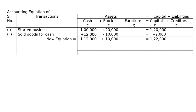Third transaction: purchased furniture on credit for thirty thousand. Furniture is an asset, so it increases by thirty thousand. Since we are purchasing on credit, our creditor increases by thirty thousand. Both the left-hand side and right-hand side are equal to thirty thousand each.